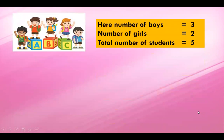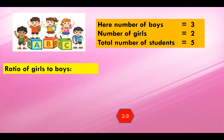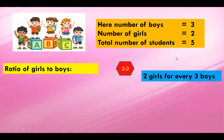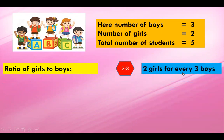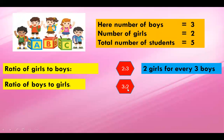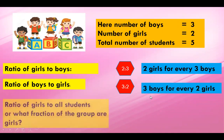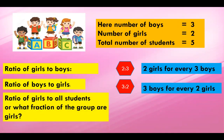Here, number of boys are 3, number of girls are 2, and total number of students are 5. So, you have to find the ratio of girls to boys. It is 2 by 3, 2 is to 3. That is 2 girls for every 3 boys. Ratio of boys to girls is 3 is to 2. That is 3 boys for every 2 girls. Ratio of girls to all students, or what fraction of the group are girls? It is 2 is to 5. That is 2 girls out of 5 students.